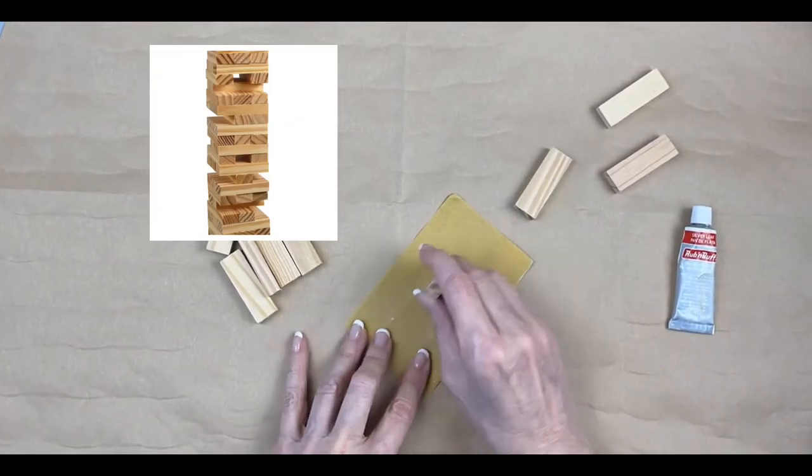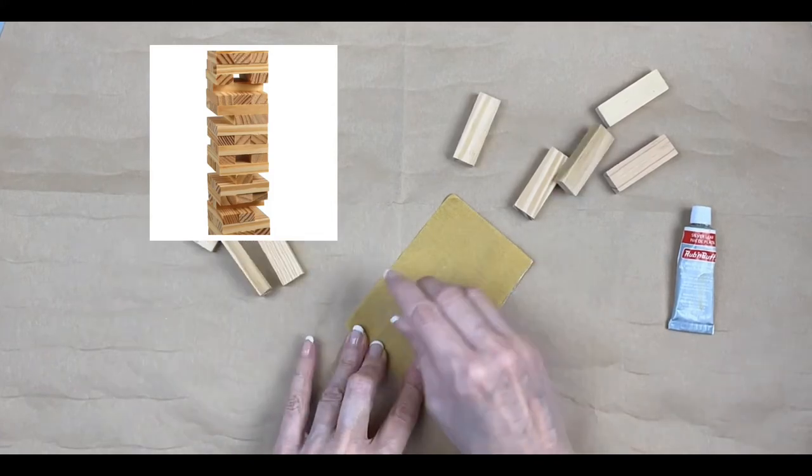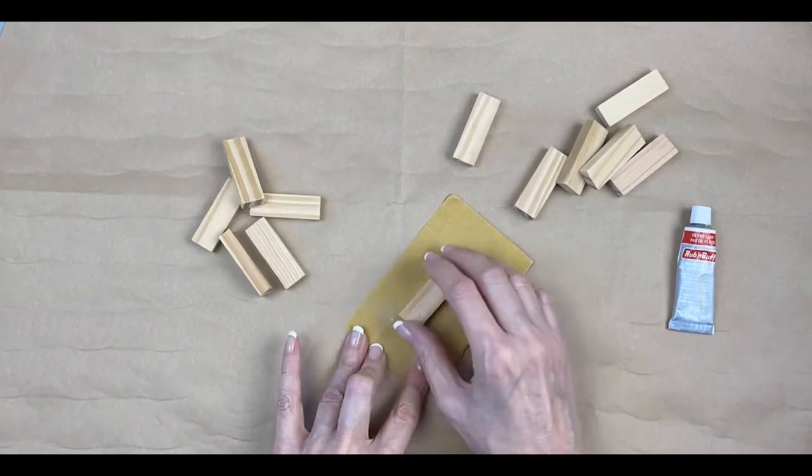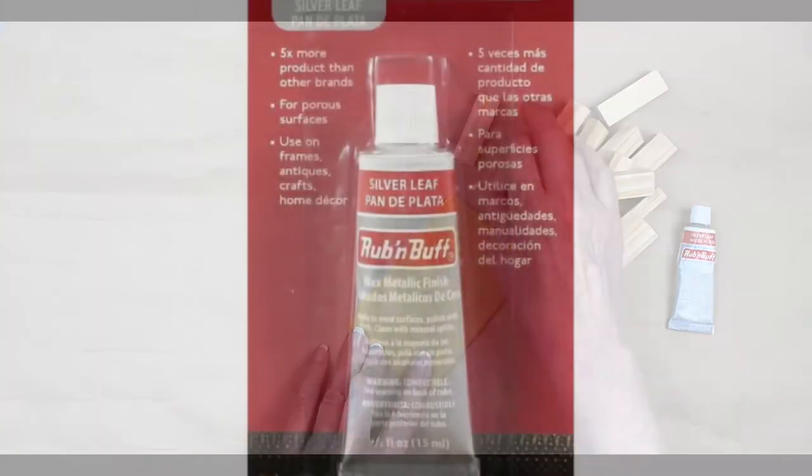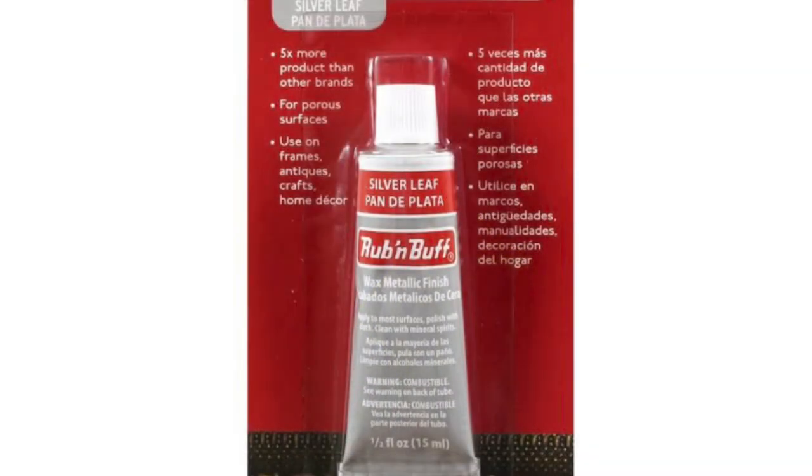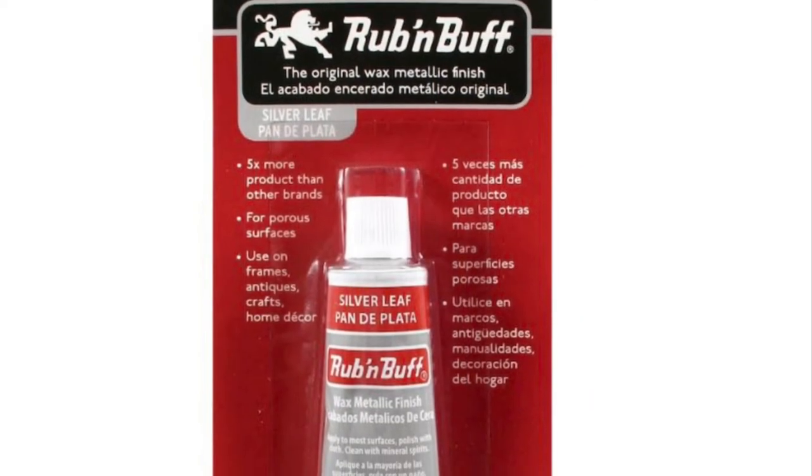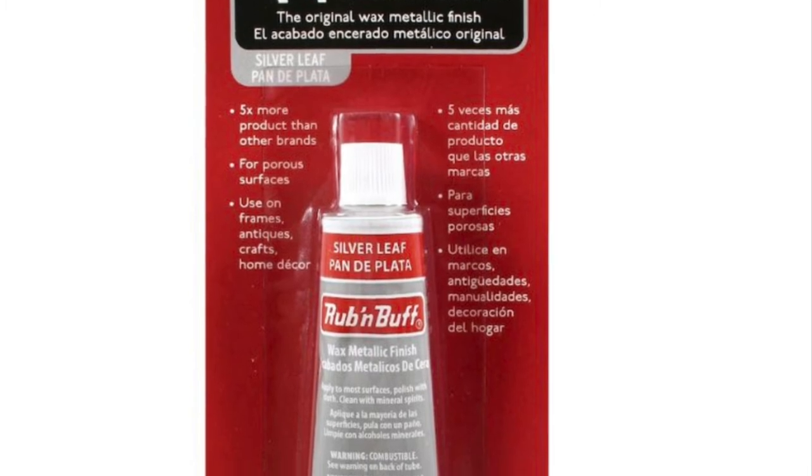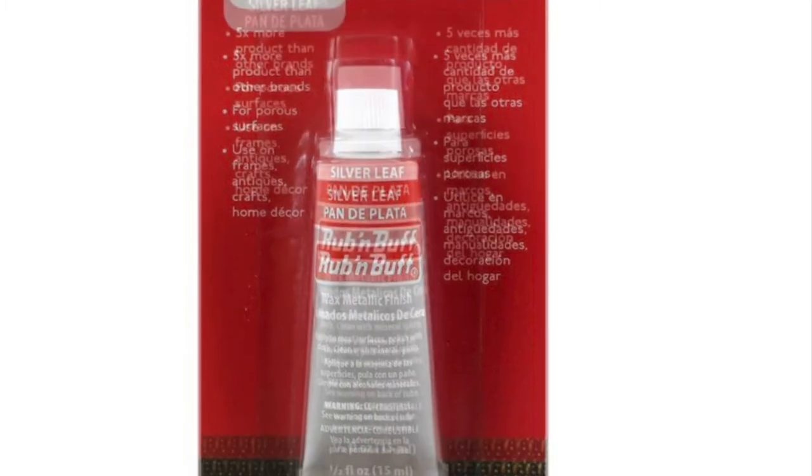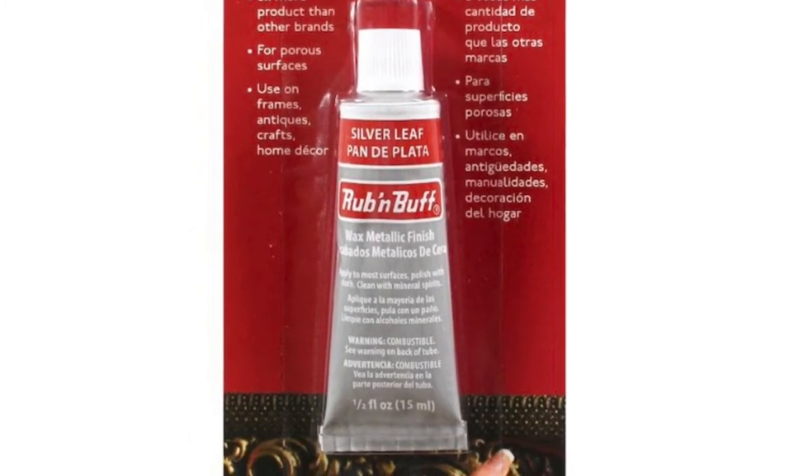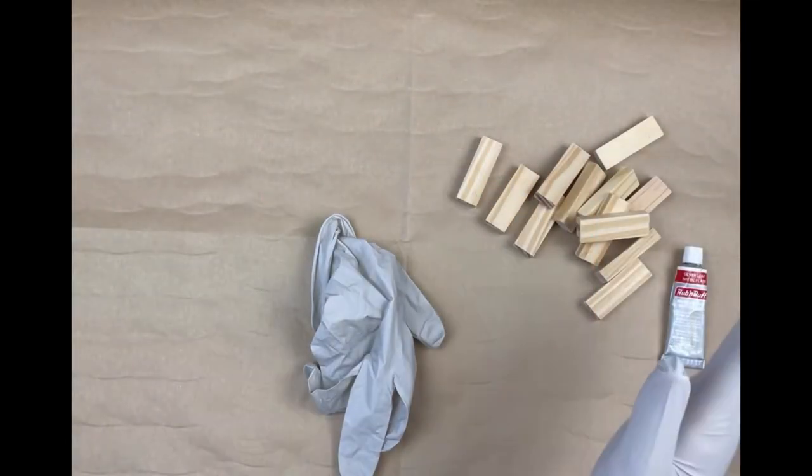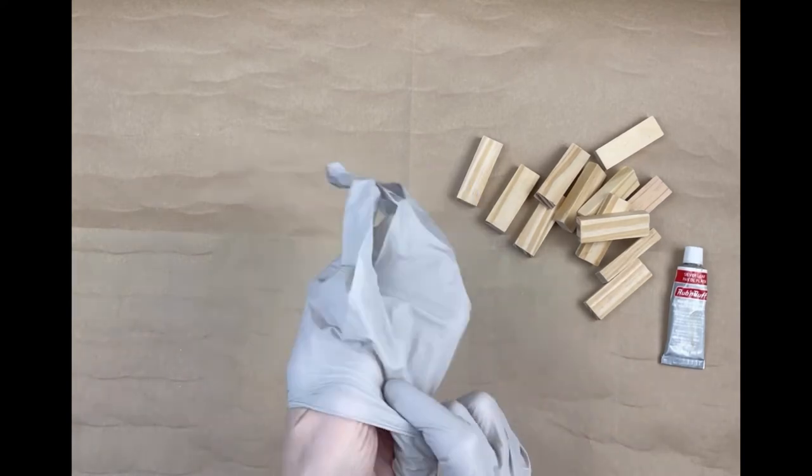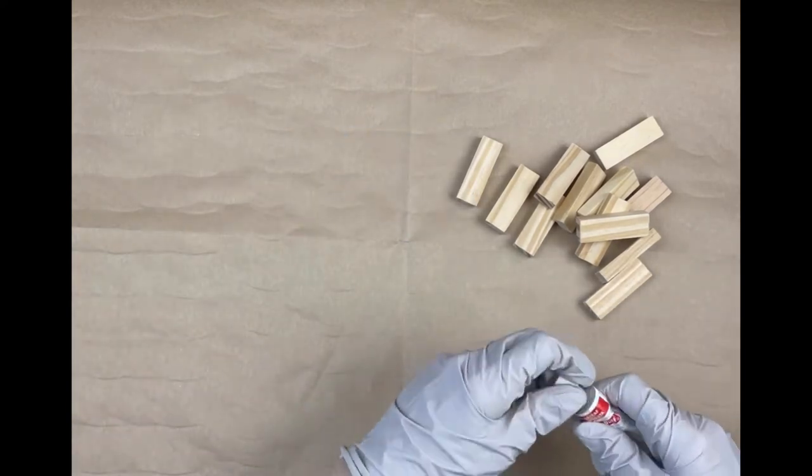Now for the numbers. Take your 12 tumbling tower blocks and sand them smooth. The smoother you sand them, the nicer the color will go in. We're actually not going to be painting. We're going to be using this product called Rub and Buff in the color of silver leaf. You can get this on Amazon or any craft store. You're probably going to want some gloves. This stuff is kind of messy. It's a wax.